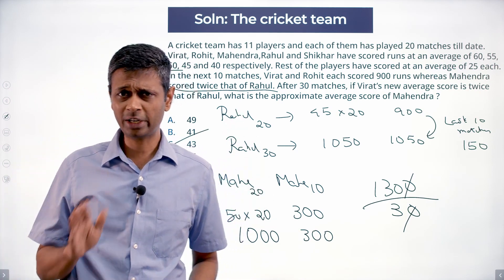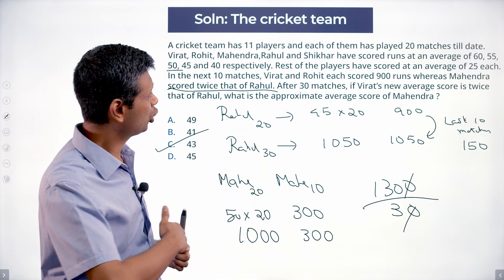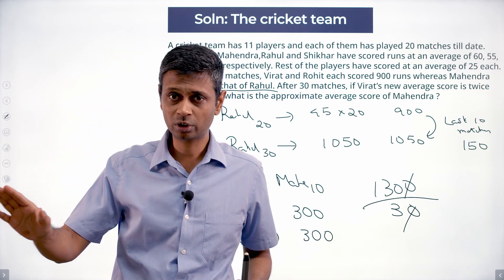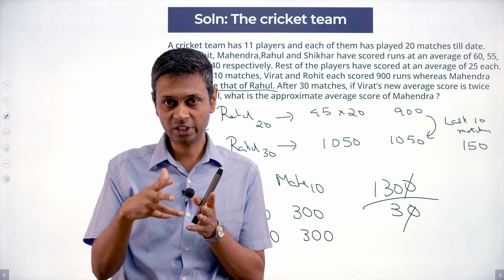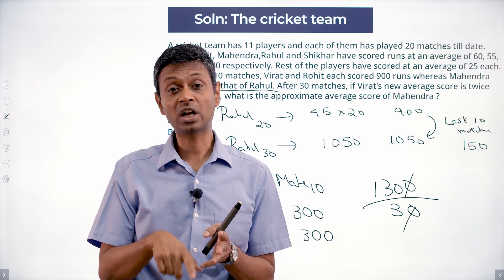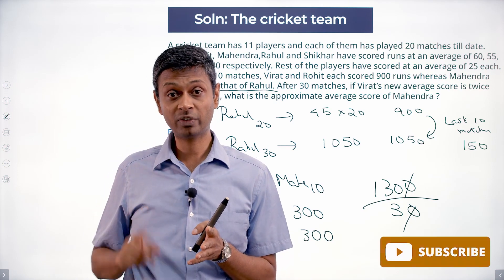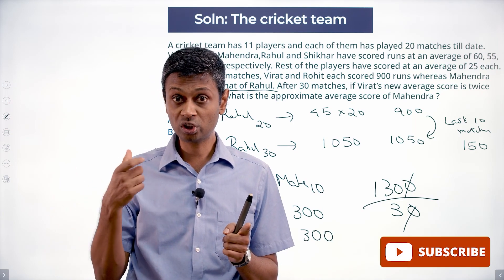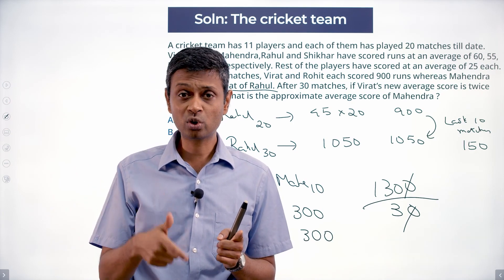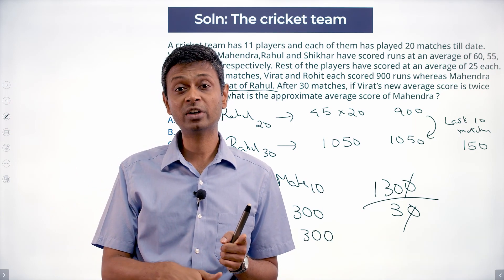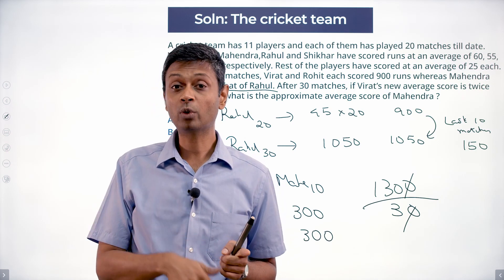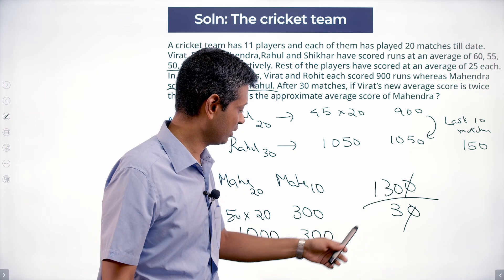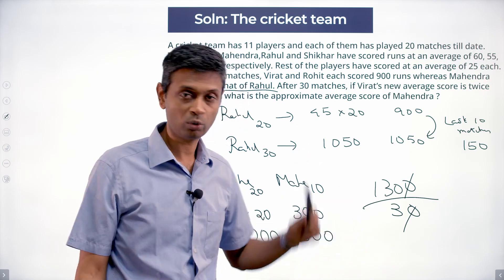This is a routine question but complicated because there is a lot of data given. Rohit, Shikhar, and other players — we don't care about. We get Virat's total, then Virat's average. We know Virat's average is twice Rahul's, so we find Rahul's total, then what Rahul scored in the last 10. From that we find what Mahendra scored in the last 10, then Mahendra's overall total and average: 43.33.